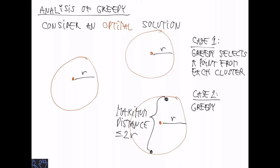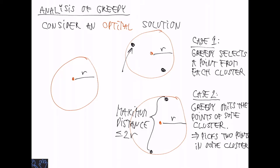The other case is that greedy does not select a point from each cluster. So there must be some cluster from which greedy selects at least two points. Let's suppose the two points are chosen in this cluster as part of the greedy algorithm. What does that mean?